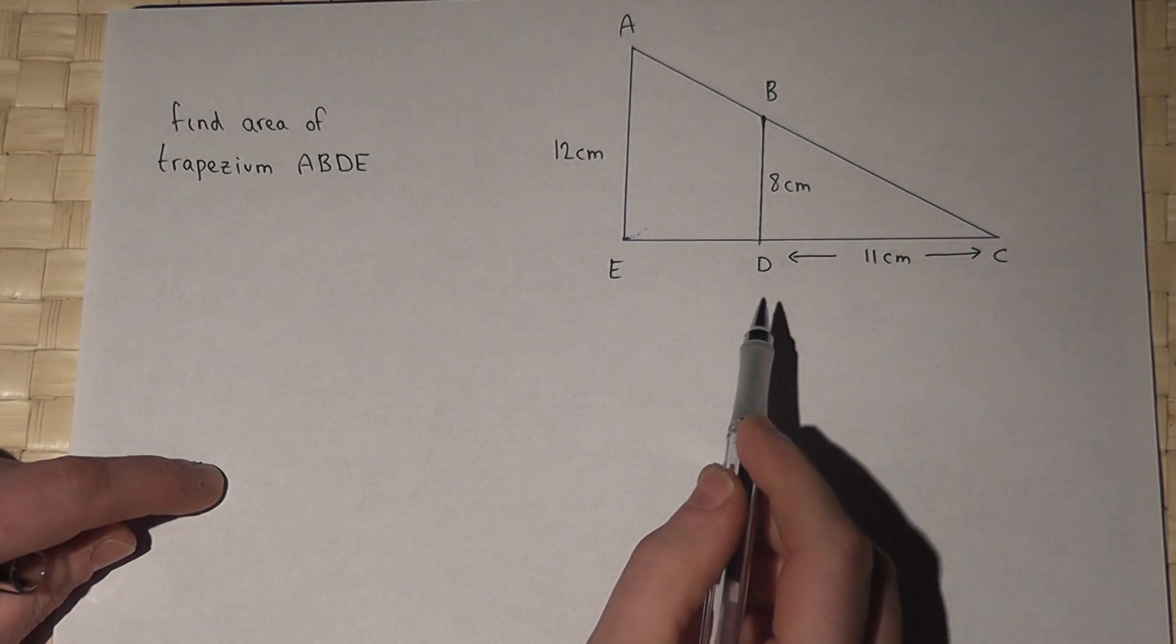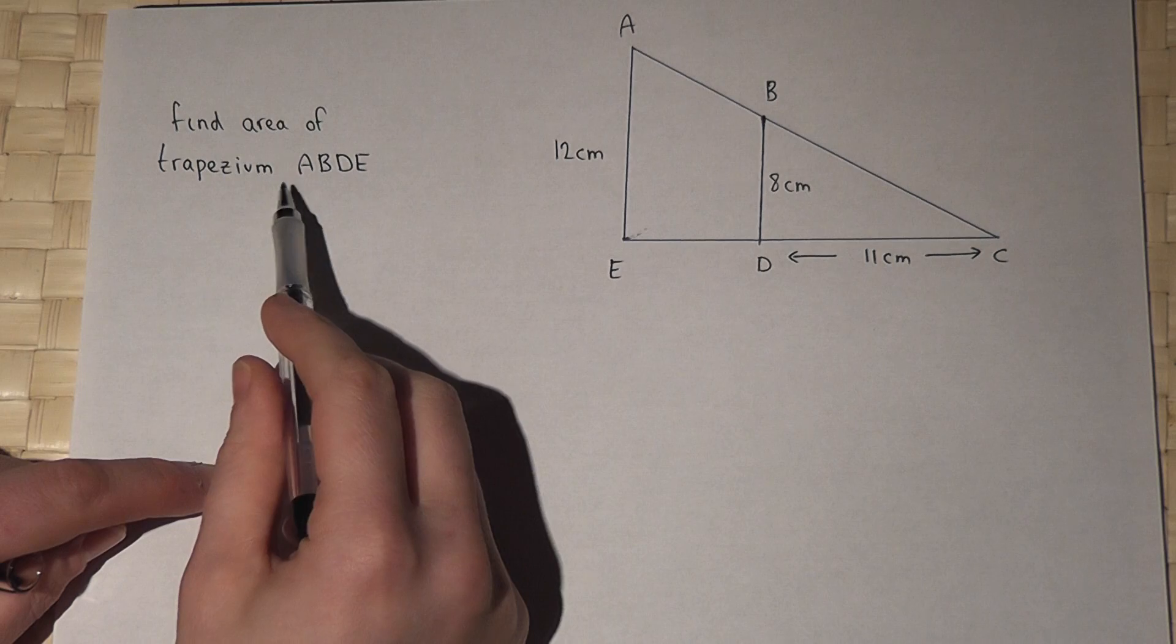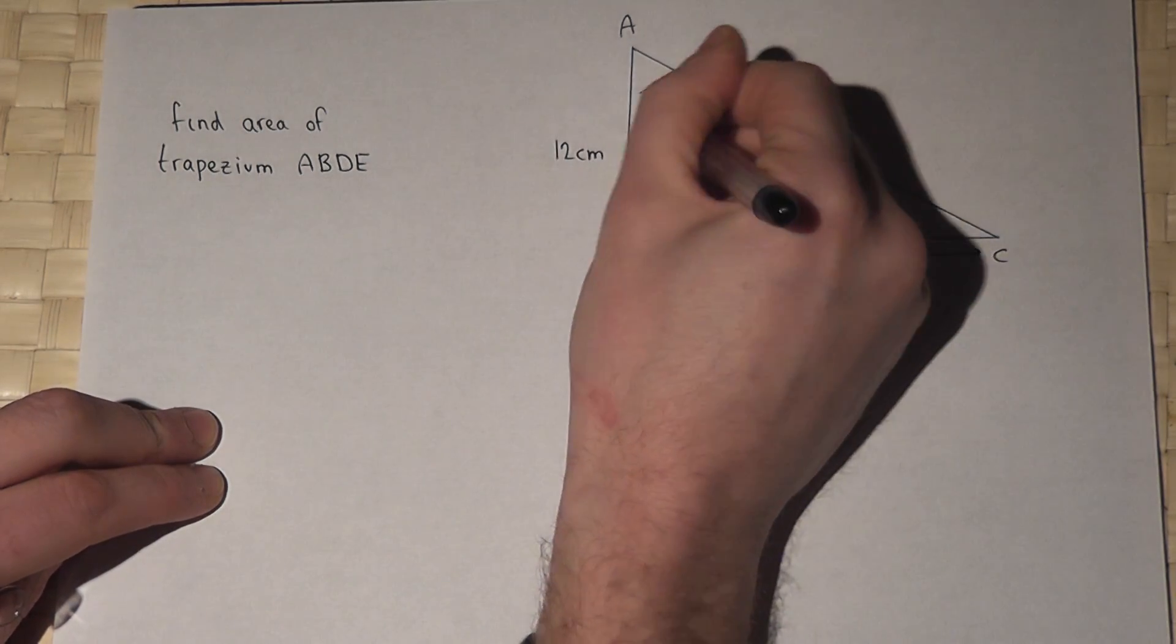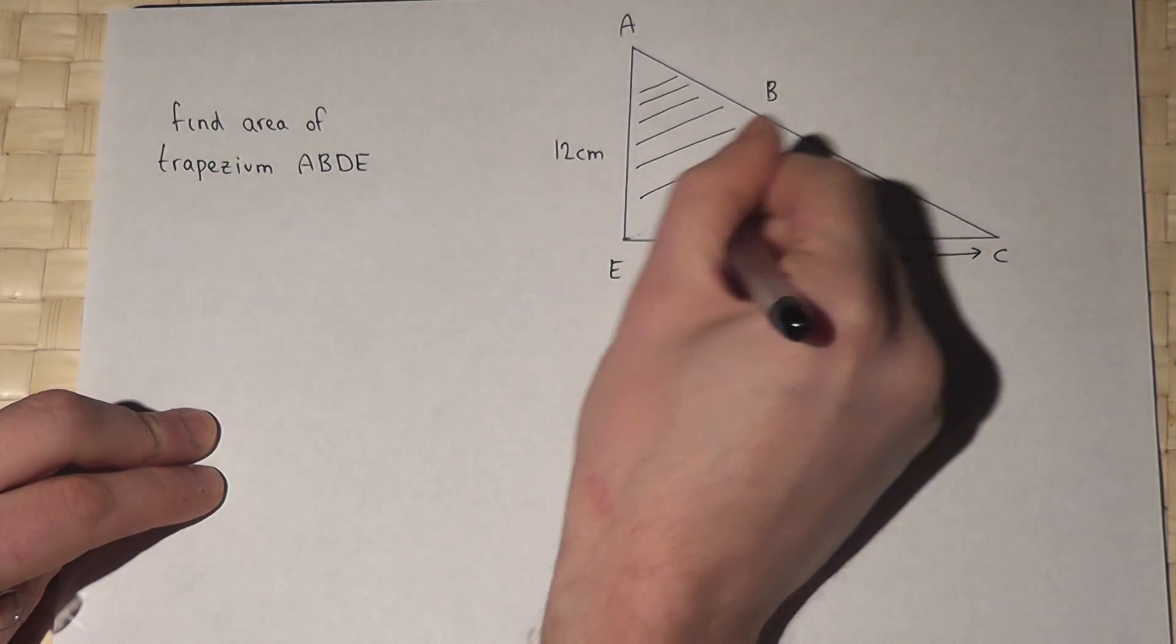In this question, we're asked to find the area of trapezium ABDE. ABDE is this shaded area here.